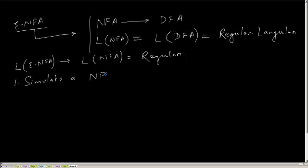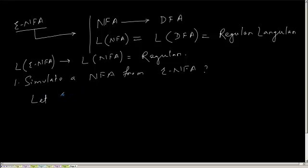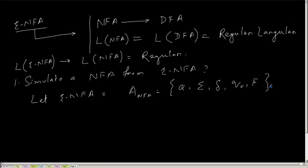So the task is to simulate a NFA from an epsilon-NFA. Suppose I have an epsilon-NFA represented as a tuple: Q, sigma, delta, starting state Q0, and final state F. How will you create a normal NFA from it — that means, how will you remove the empty transitions?